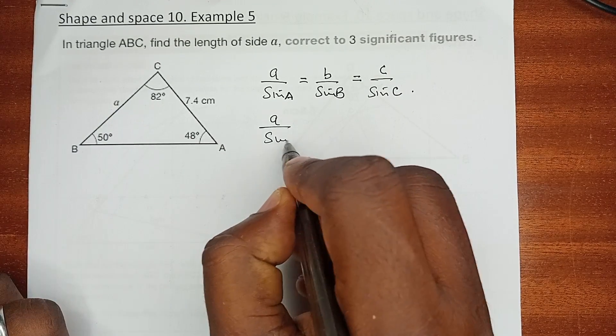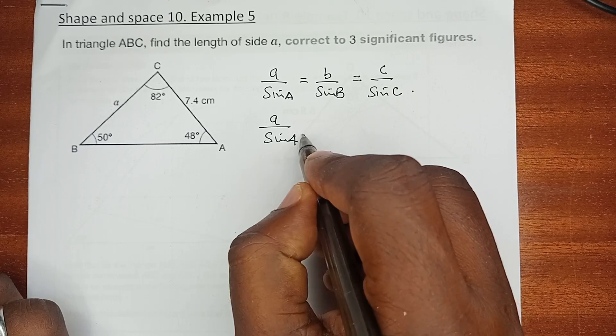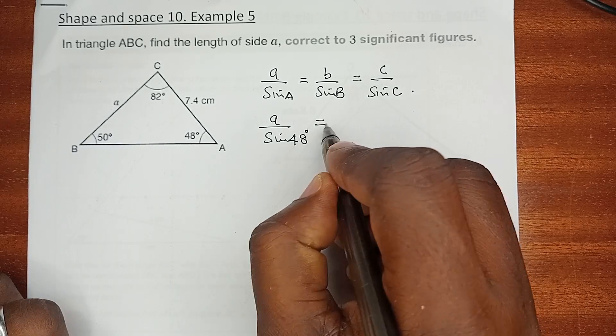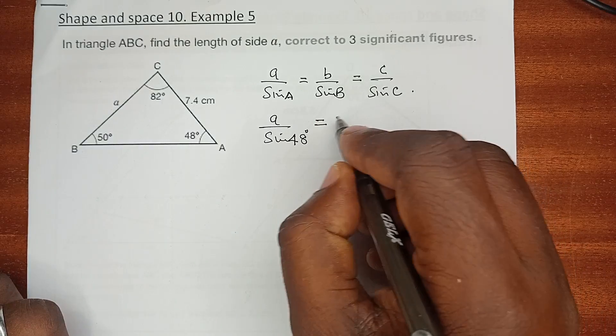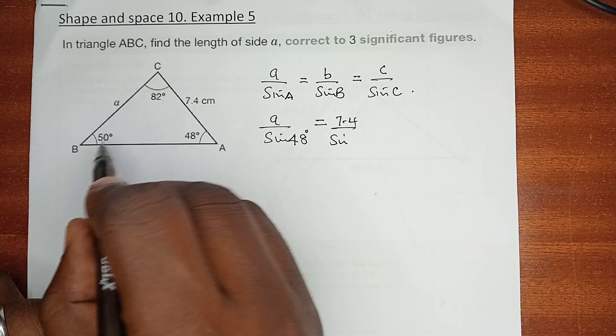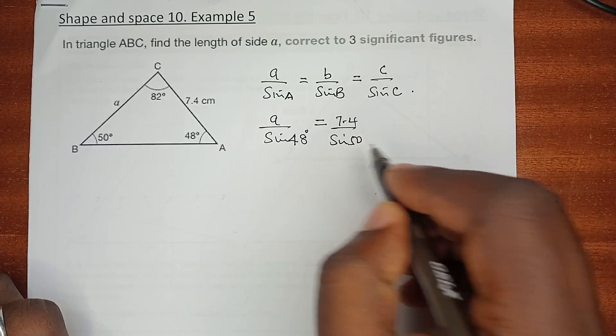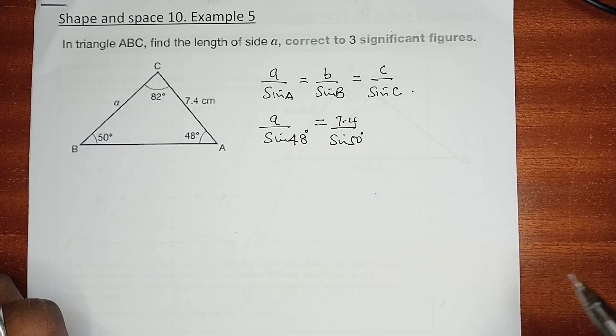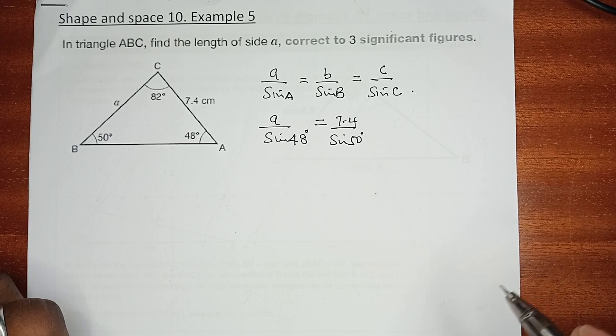We can say a over the sine of angle A, which is 48 degrees, should be equal to side b, which is 7.4, over the sine of the opposite angle, which is 50 degrees. At that point we need now to make a the subject of the formula.